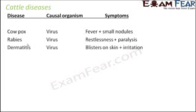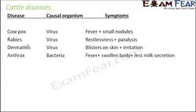Dermatitis — 'derma' comes from skin, so anything that happens on the skin. Symptoms include blisters on the skin, irritation, and itching. Dermatitis is caused by a virus. Anthrax is caused by bacteria.